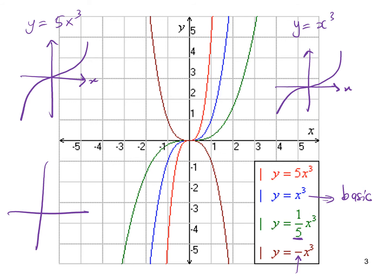For negative coefficients, for example y = -3x³, the graph is reflected, going from left to right in the opposite direction.